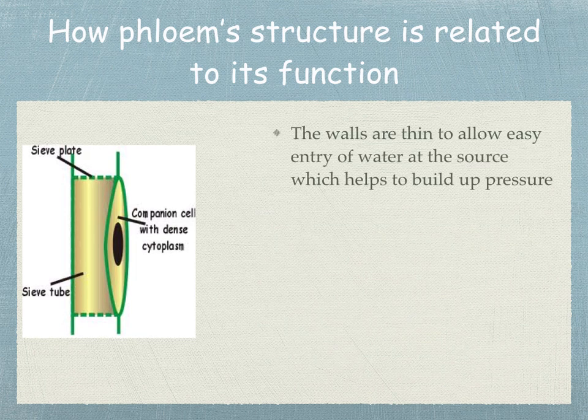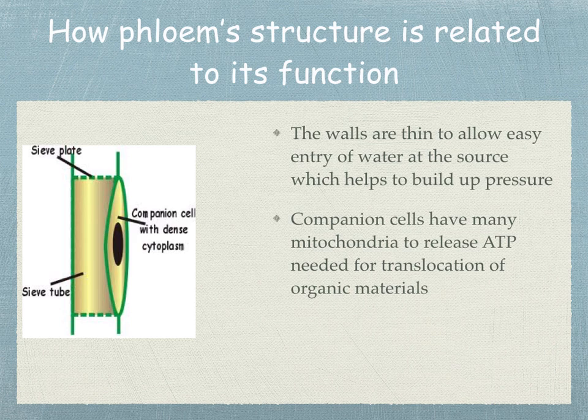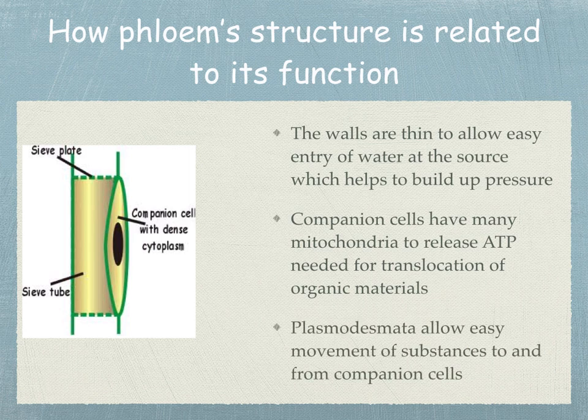The walls are thin to allow easy entry of water at the source, which helps to build up pressure. The companion cells have many mitochondria to release ATP needed for the translocation of organic materials. Finally, plasmodesmata allow easy movement of substances to and from companion cells.